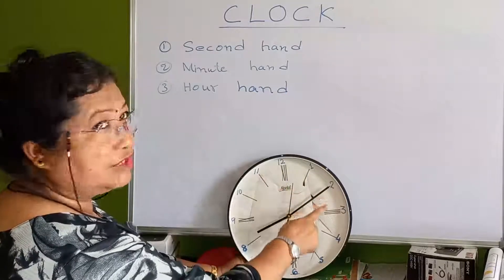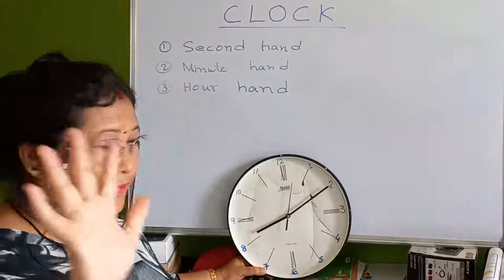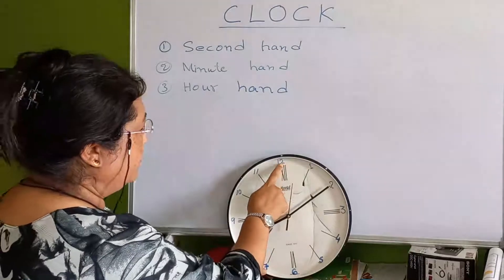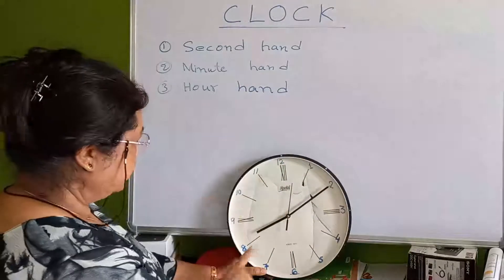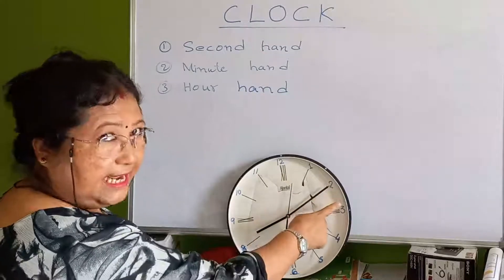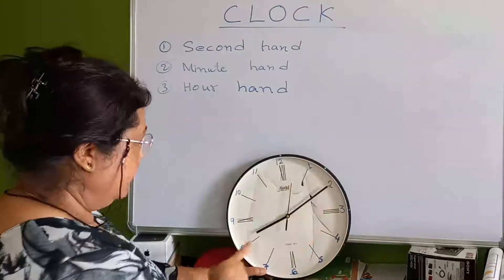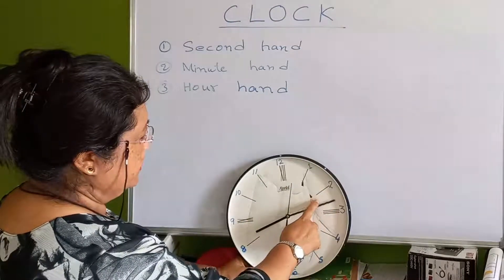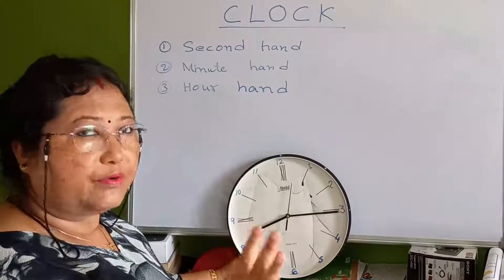When the minute hand moves slowly to 2, the difference from 1 to 2 is another 5 minutes, so that is 5 plus 5 equals 10. So the time becomes 8:10 — 10 minutes past 8. Each gap between numbers on the clock equals 5 minutes.